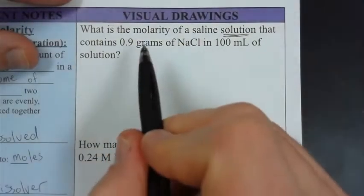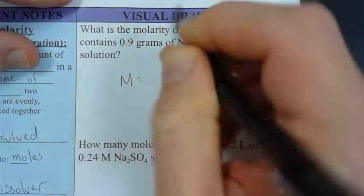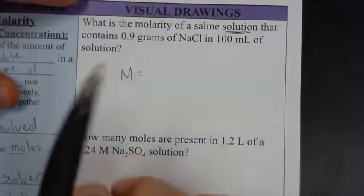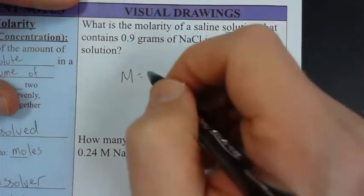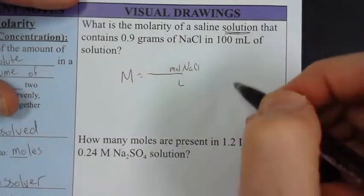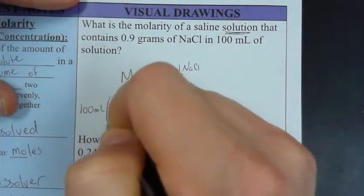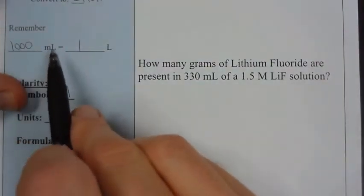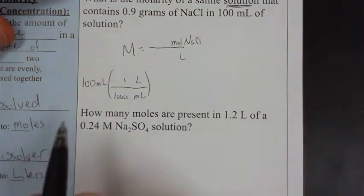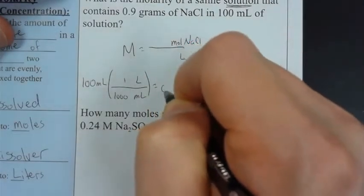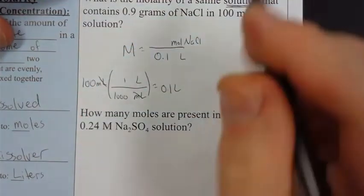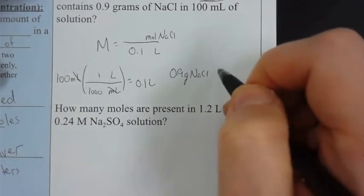The first practice problem is straightforward. We want to find the molarity given 0.9 grams of sodium chloride dissolved into 100 milliliters of water. Molarity is moles per liter. We've got grams and milliliters, so we have to do two separate conversions before we can plug in moles in the numerator and liters in the denominator. First I'm going to convert 100 milliliters. If 1,000 milliliters equals one liter, then milliliters goes in the denominator. For every 1,000 milliliters, there's one liter. If we have 100 milliliters, we've only got a tenth of that, so this equals 0.1 liters.